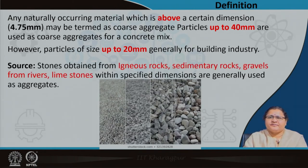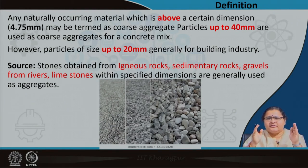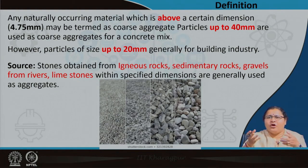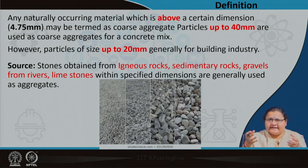What are the sources? Unlike sand which was mostly from rivers, here you see these are stones obtained from igneous rocks, sedimentary rocks, and gravels obtained from the river. Limestones with specified dimensions are also mostly clubbed under coarse aggregates. Igneous rocks, sedimentary rocks, and gravels are chosen because ultimately these are imparting strength to the concrete — binding rocks of lesser dimension together to form something like a rock.